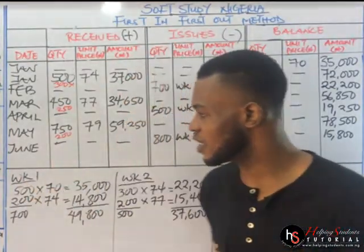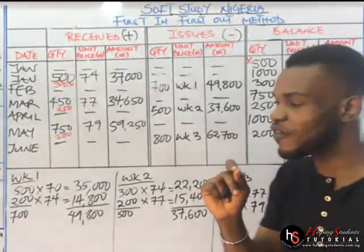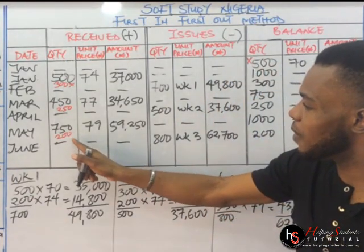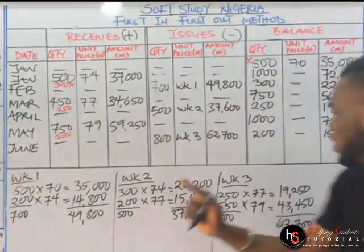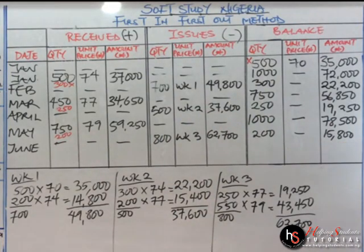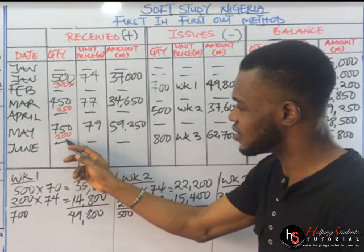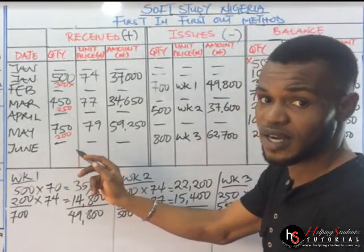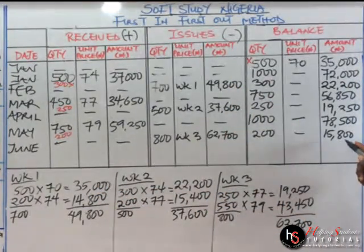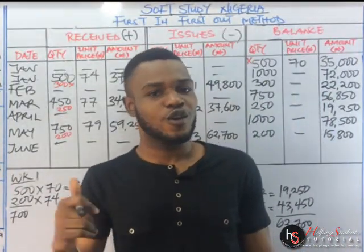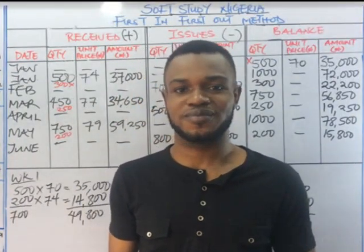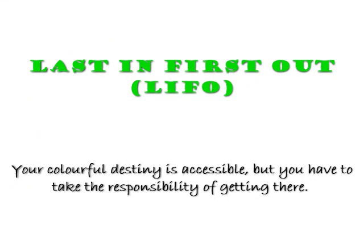Before we go, take note of this. After solving this question, to verify if you are correct, the final balance quantity is 200 units. If you multiply 200 by the unit price of 79, it should give you the same final balance value. 200 times 79 gives you 15,800. If you get a wrong answer, that means you missed a step somewhere. Do have a good day and we'll meet you at the top. Thank you.